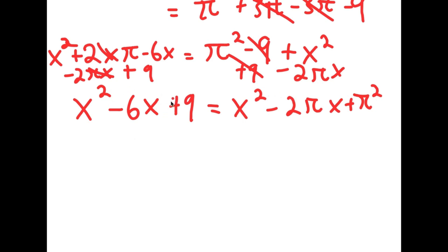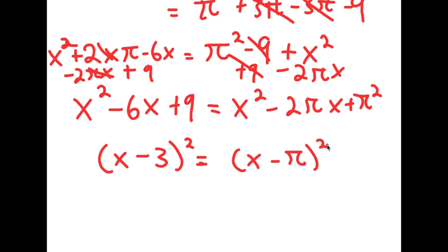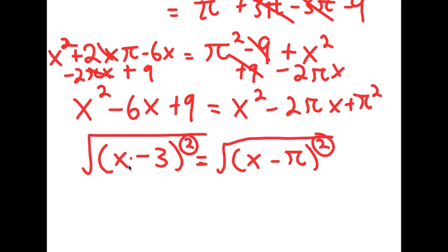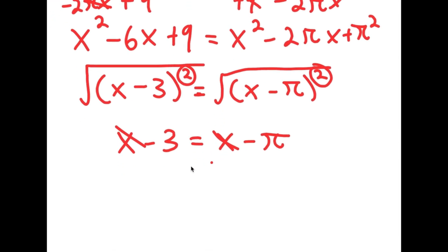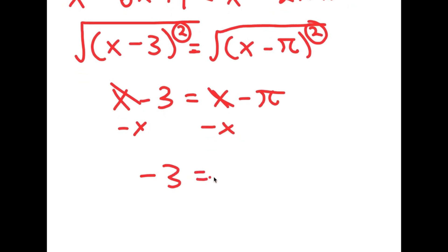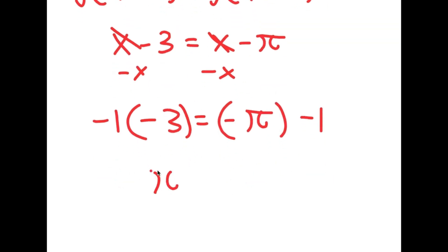So I have x squared minus 6x plus 9 is equal to x squared minus 2·pi·x plus pi squared. Now, x squared minus 6x plus 9 factors out into (x minus 3) squared. And x squared minus 2·pi·x plus pi squared is the same thing as (x minus pi) squared. So I have (x minus 3) squared is equal to (x minus pi) squared. I want to cancel these two squares, so I'm going to take the square root on both sides. The square root of (x minus 3) squared equals x minus 3, and the square root of (x minus pi) squared equals x minus pi. So I get x minus 3 equals x minus pi. Subtracting x from both sides, I get negative 3 equals negative pi — and multiplying both sides by negative 1, I get pi is equal to 3.